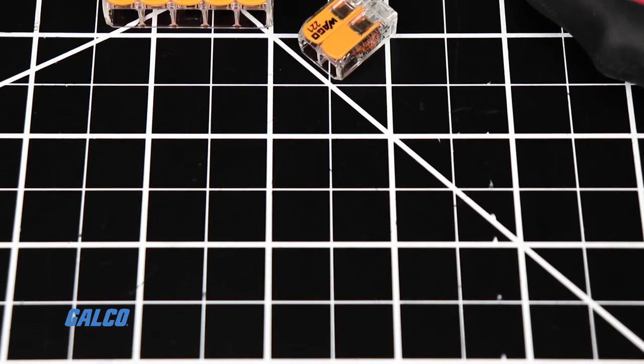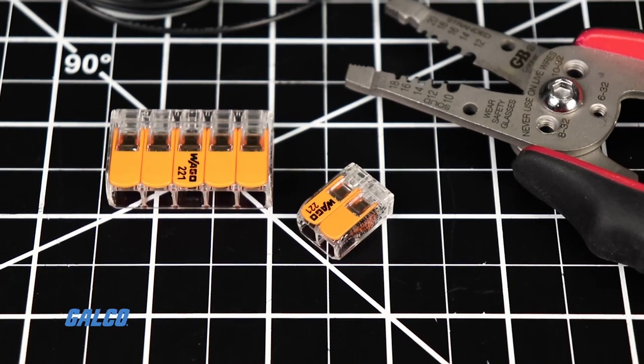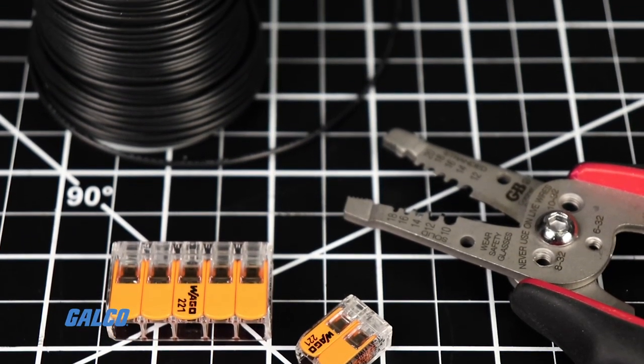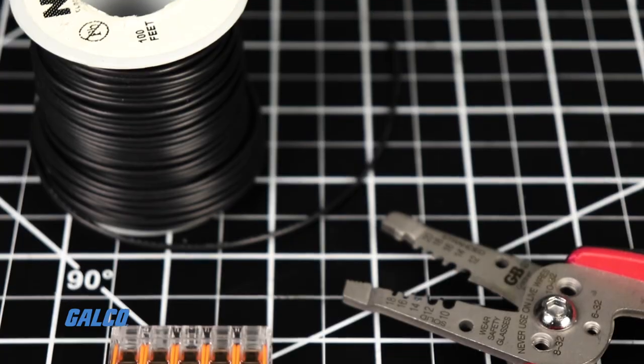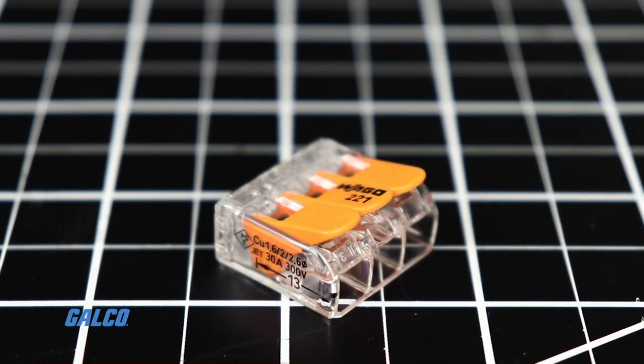2-2-1-4 Connectors can accept standard, solid, stranded, and fine-stranded conductors with cross-sections up to 4mm. 2-2-1-6 Connectors can accommodate 6mm conductors.